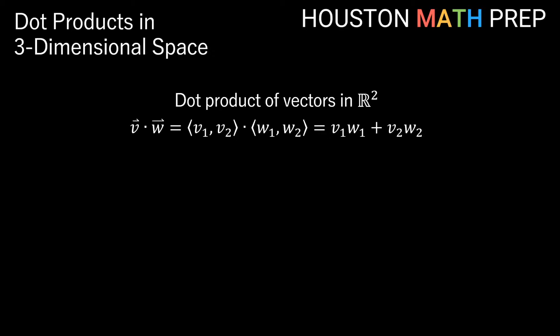To calculate a dot product we simply start by multiplying component-wise. So here you can see I'm multiplying the first component in V, which is V1, by the first component W1. Then I do the same thing with the second components in each vector. Once we multiply these, then we add up what we get for our answer.